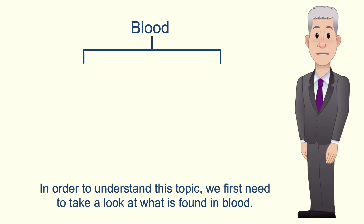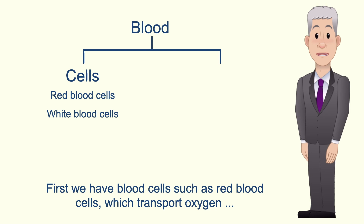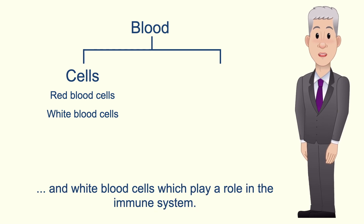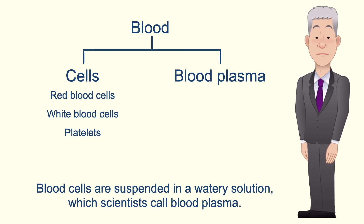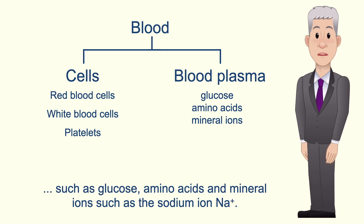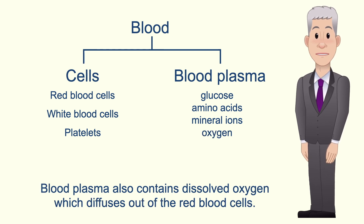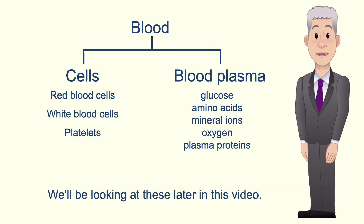In order to understand this topic, we first need to take a look at what's found in blood. Blood consists of two main parts. First, we have blood cells, such as red blood cells which transport oxygen, and white blood cells which play a role in the immune system. We also have cell fragments called platelets, which are involved in blood clotting. Blood cells are suspended in a watery solution which scientists call blood plasma. Blood plasma contains a range of dissolved molecules such as glucose, amino acids, and mineral ions such as the sodium ion Na+. Blood plasma also contains dissolved oxygen, which diffuses out of the red blood cells. Another very important part of blood plasma are proteins such as albumin. Scientists refer to these as plasma proteins, and we'll be looking at these later in this video.